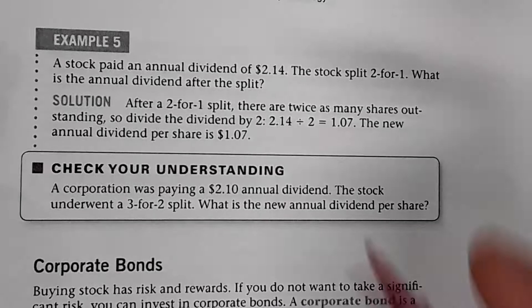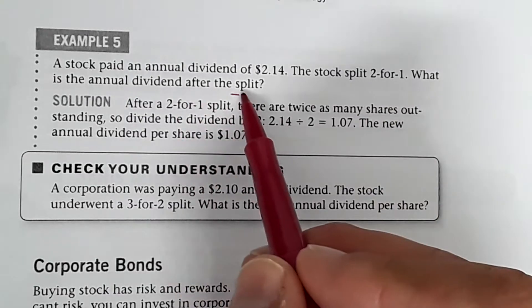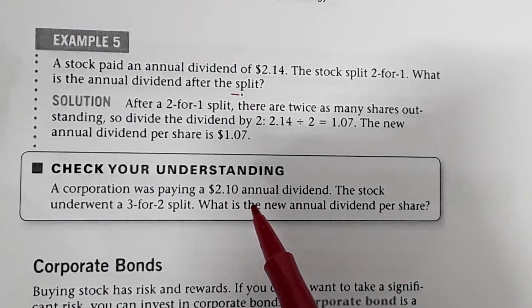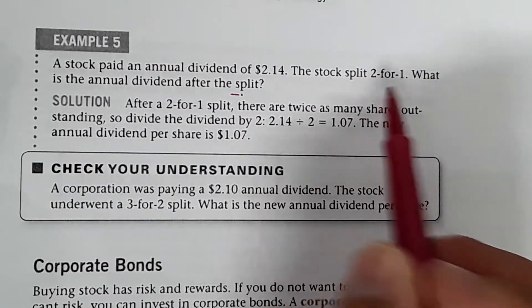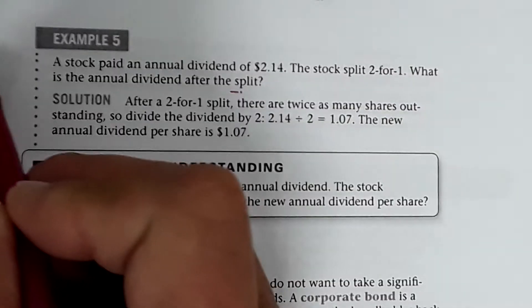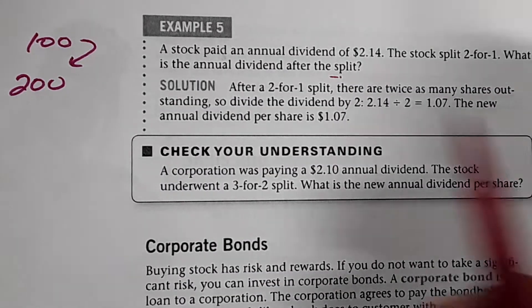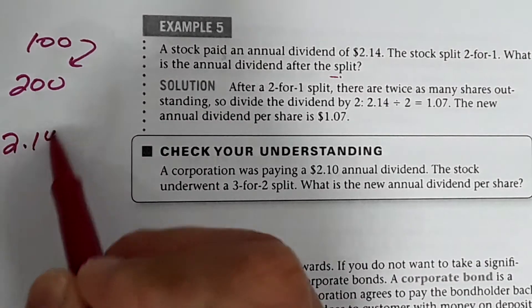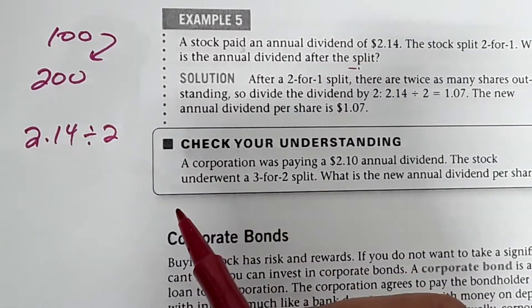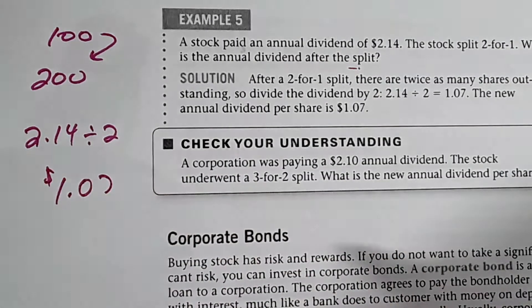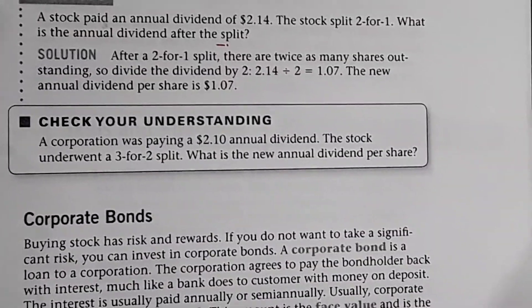All right. A stock paid an annual dividend of $2.14. The stock split two for one. What's the annual dividend after the split? If the dividend was $2.14, and the stock split two for one. So remember, if you owned 100 shares, now you own 200 shares. If the annual dividend was $2.14, now that you own twice as many shares, you would simply need to divide that by two to get the new dividend, which would be $1.07. It's all about whether you're multiplying by that number or dividing by that number.